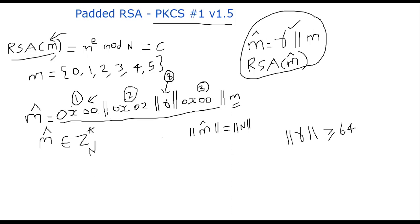So RSA is now no longer called on m, it's called on m cap. So RSA of m cap is called. And the decryptor will receive ciphertext C. It will decrypt it using the regular RSA decryption. It will get back m cap. And then it will just parse this text and say, OK, where is my 0x00 at the end?